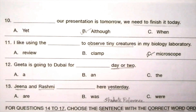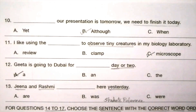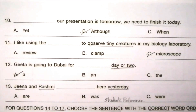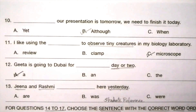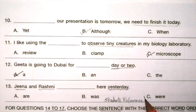Question 13: Zina and Rashmi ___ here yesterday. 'Zina and Rashmi' and 'yesterday' are keywords. Options: or, was, were. The answer is C — 'were'. Zina and Rashmi were here yesterday.